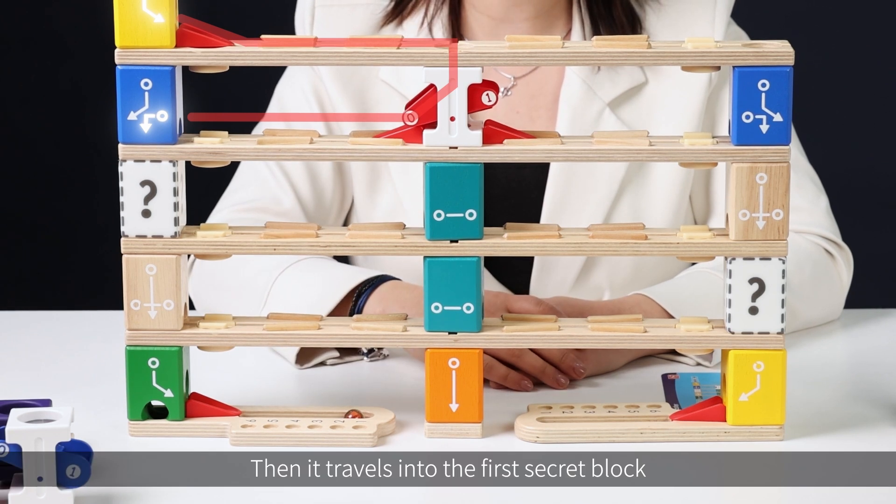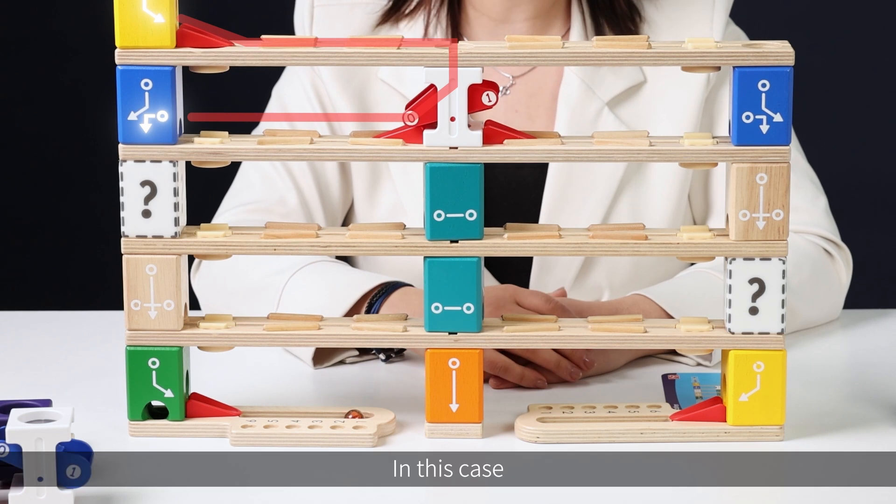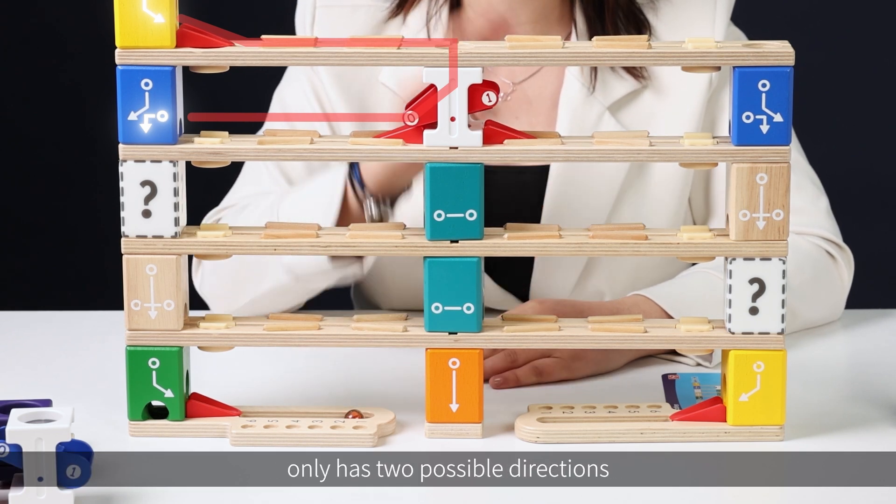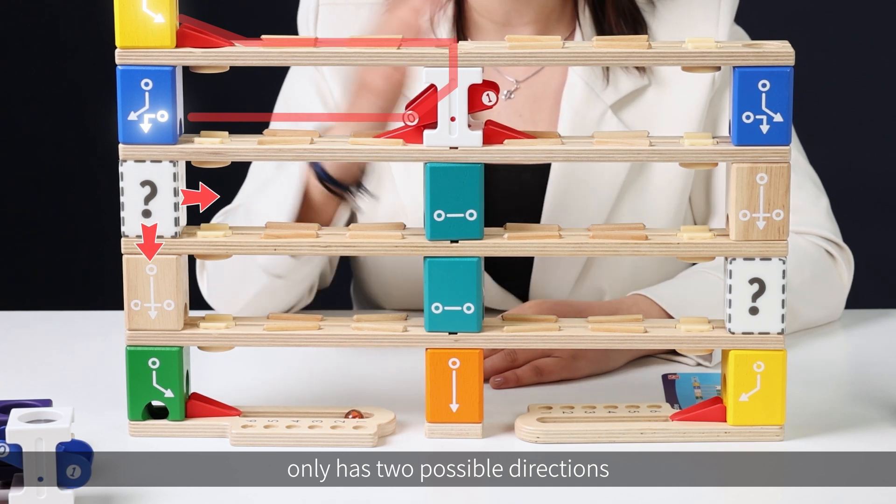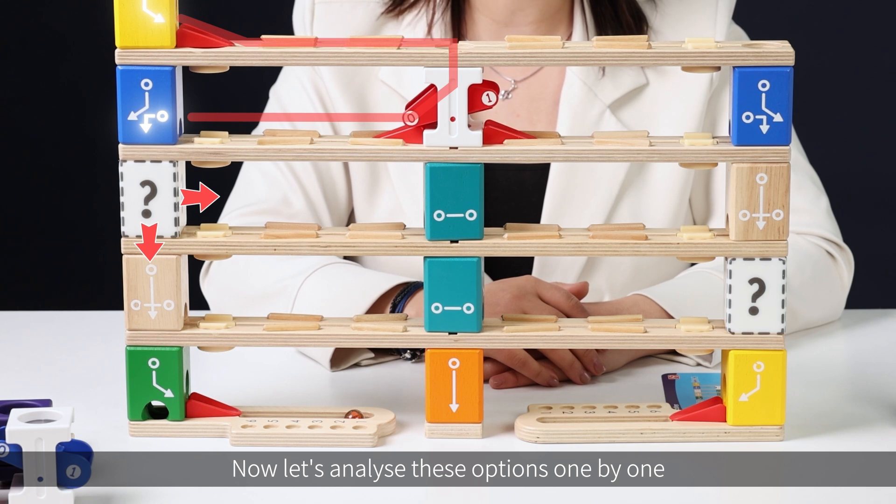Then, it travels into the first secret block through the blue block. In this case, we can see that the first secret block only has two possible directions, rightwards and downwards. Now, let's analyze these options one by one.